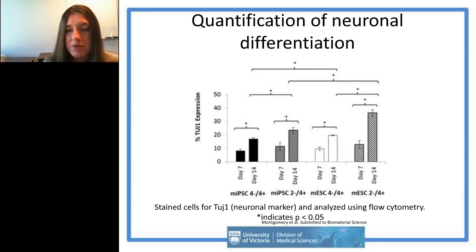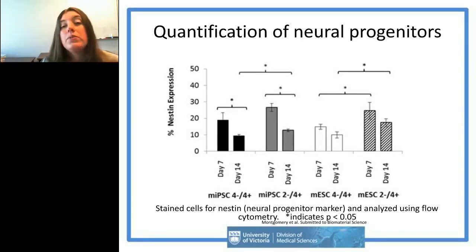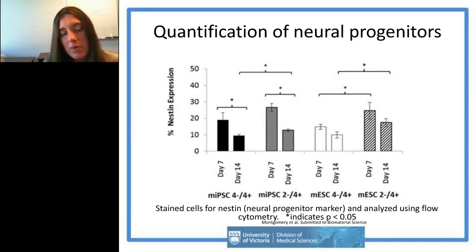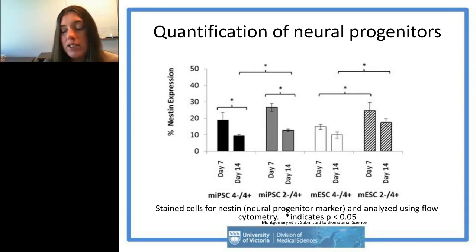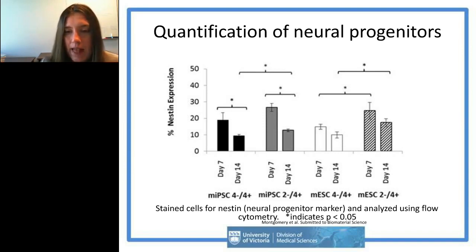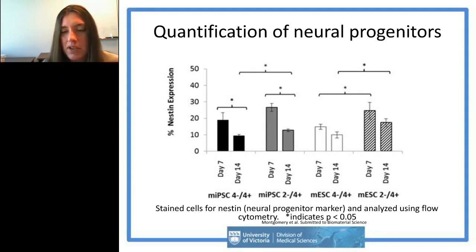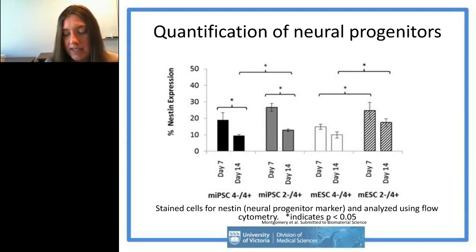We also stained for the nestin marker to quantify our system. As expected, at most time points we saw a decrease in nestin staining from day 7 to day 14, which makes sense as cells continually differentiate — there should be fewer neural progenitors and more mature cells at day 14. We saw fewer neural progenitors in the 4+4 protocol compared to the shorter 2+4 purmorphamine protocol, consistent with expectations.